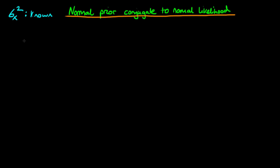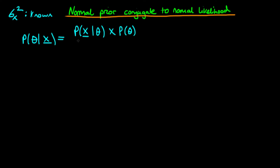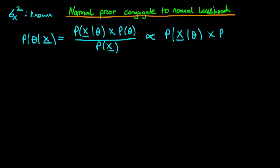Starting off with Bayes' rule, we know that the posterior density — the probability of theta given our data x — is equal to the probability of x given theta, the likelihood, times the probability of theta, which is just our prior density, divided through by the probability of our data. We've said before that we can essentially forget about the denominator here because there is no theta dependence; the theta dependence has been integrated out. Hence the posterior density is proportional to the product of the likelihood times the prior.